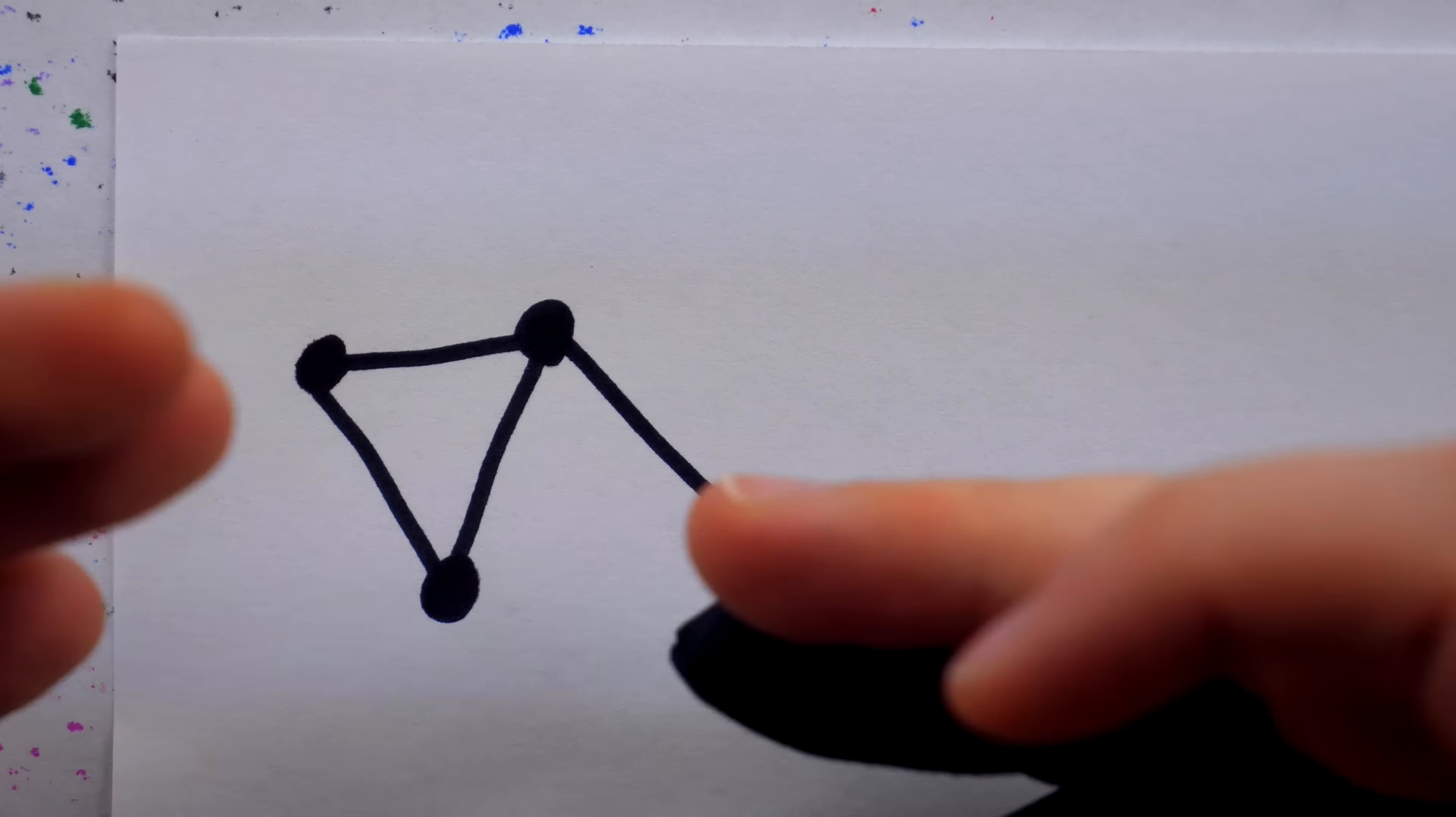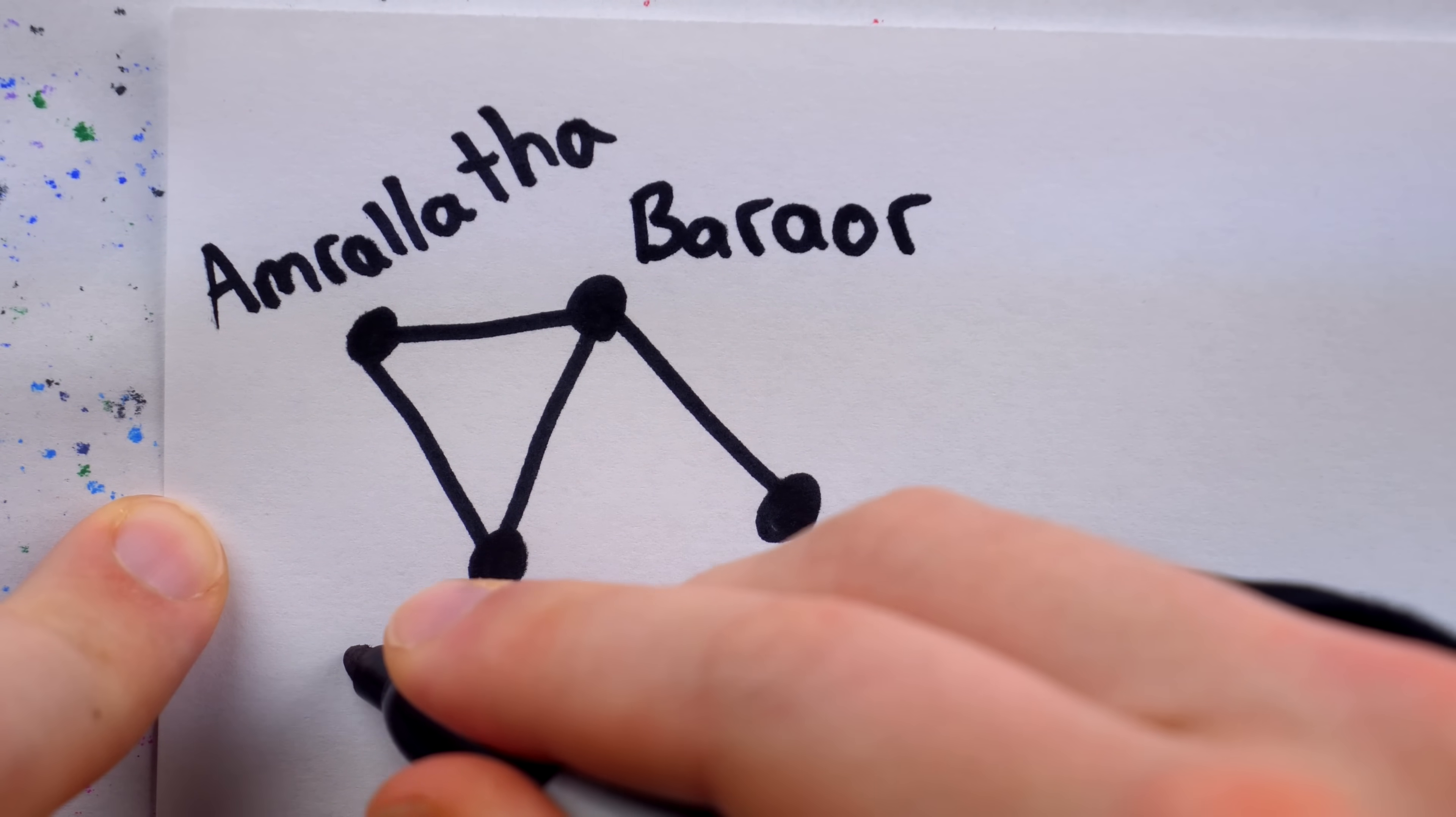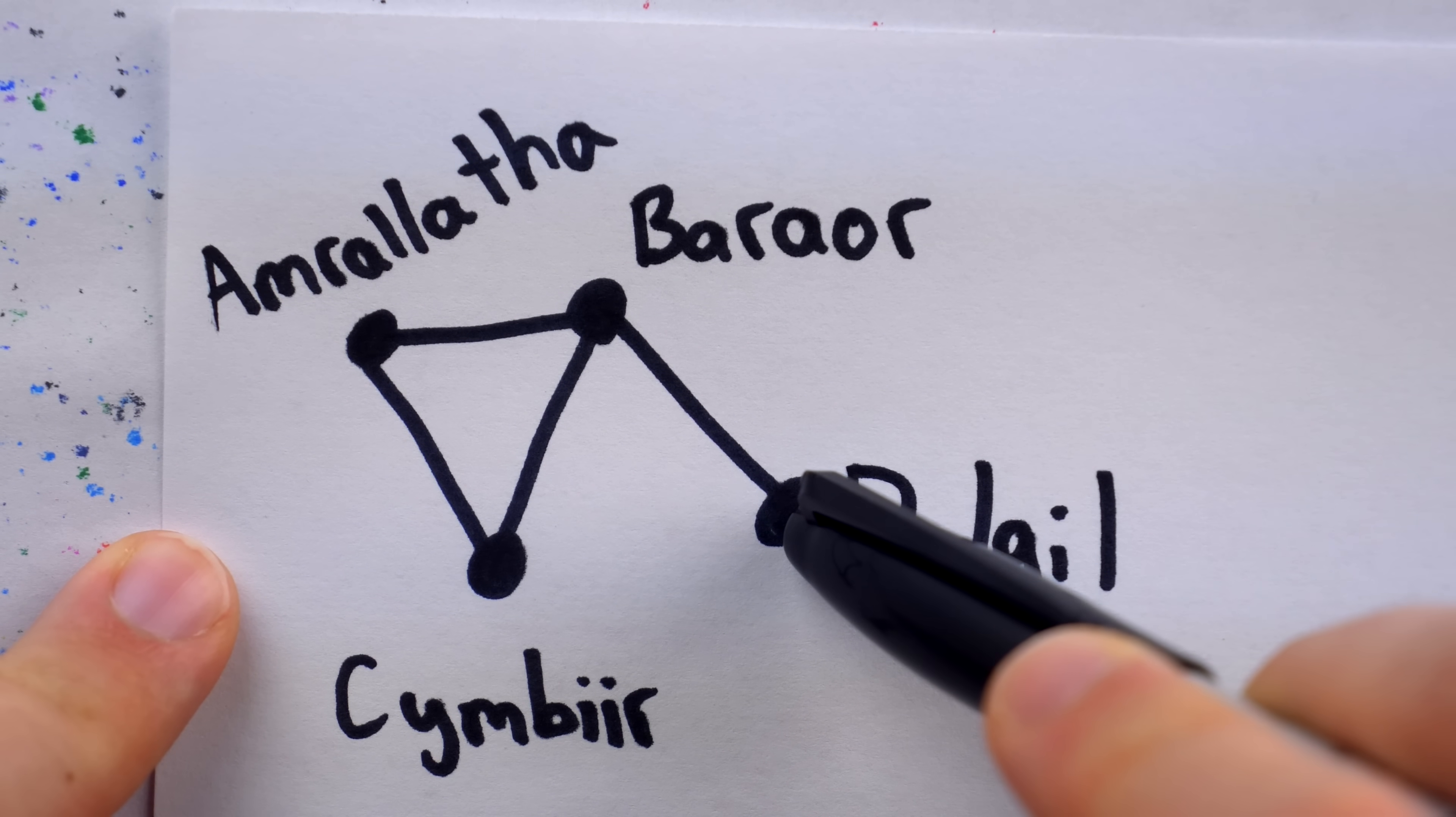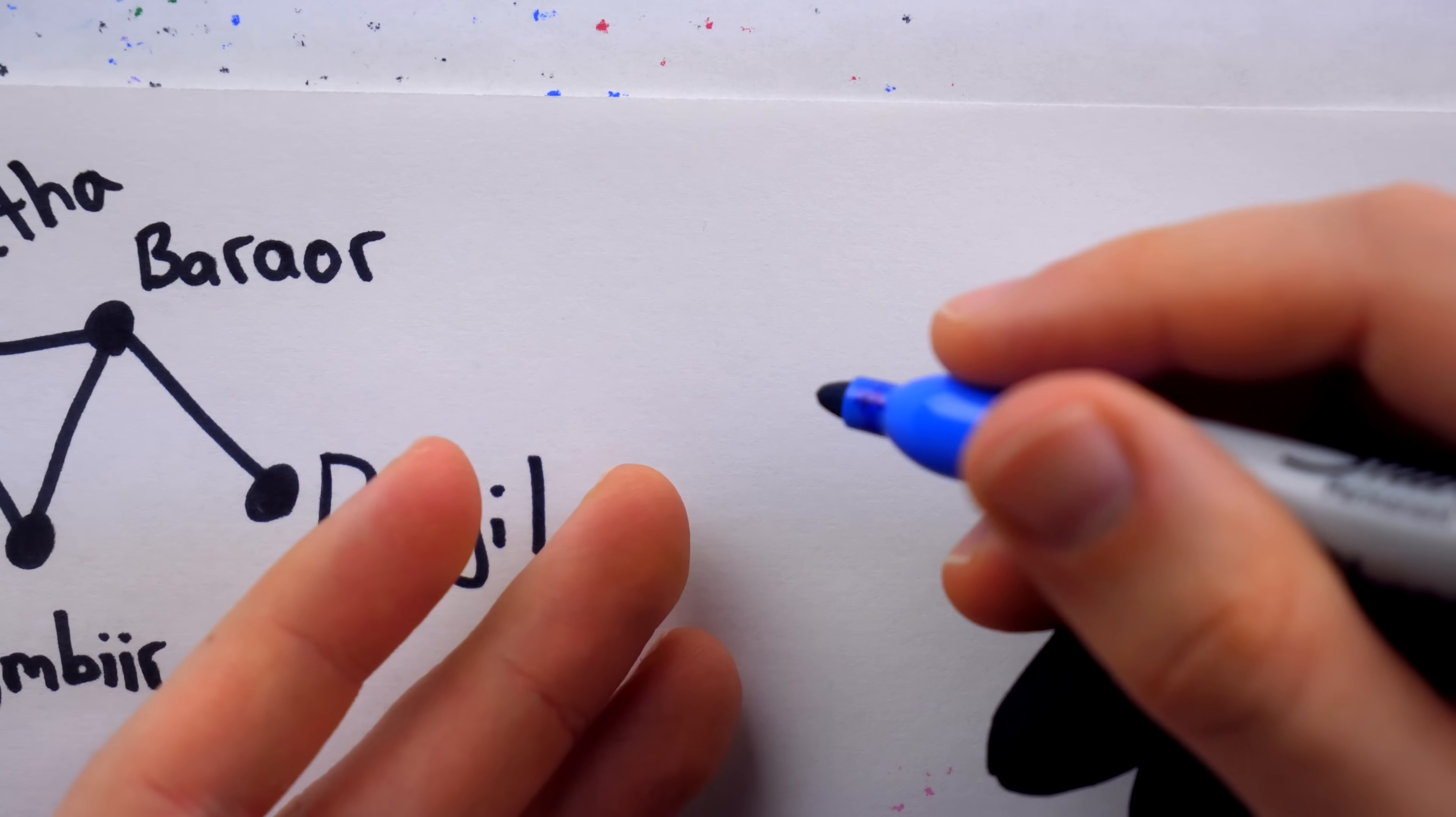The vertices can represent anything, and the edges often represent some sort of relationship between the vertices. For example, this graph could be a social network. So each vertex is a person, maybe this vertex is Amrolitha, this vertex could be Baror, this one could represent Simbir, and this one is Dolgil. And then there could be an edge between any two people that are friends. So Baror and Simbir are friends. Baror and Dolgil are also friends. However, Dolgil is not friends with Amrolitha, because there's no edge joining them. This is an example of what's called a simple graph.